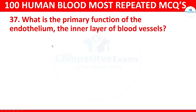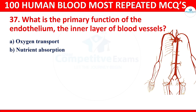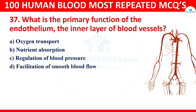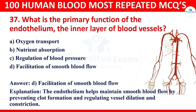Question 37: What is the primary function of the endothelium, the inner layer of blood vessels? Options: oxygen transport, nutrient absorption, regulation of blood pressure, or facilitation of smooth blood flow. The correct answer is facilitation of smooth blood flow. The endothelium helps maintain smooth blood flow by preventing clot formation and regulating vessel dilation and constriction.